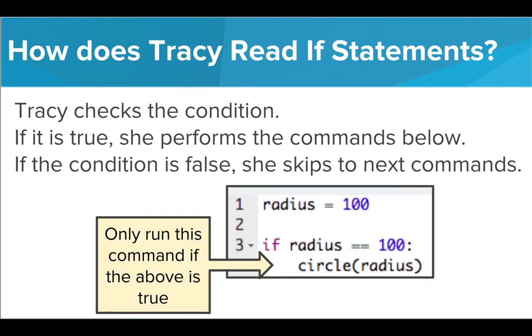We only complete the command of taking an umbrella if the condition that it's raining is true. When we give Tracy an if statement, she goes through a similar process. First, she checks the condition we gave her. If the condition is true, she performs the commands indented below. If the condition is false, she skips the indented commands and moves on to the commands that follow.